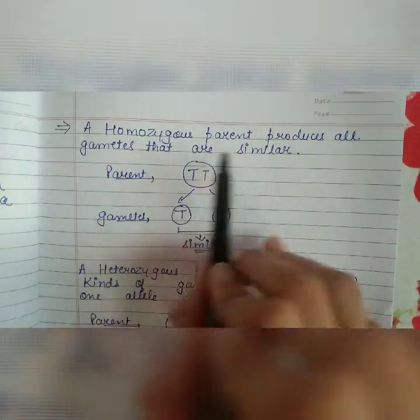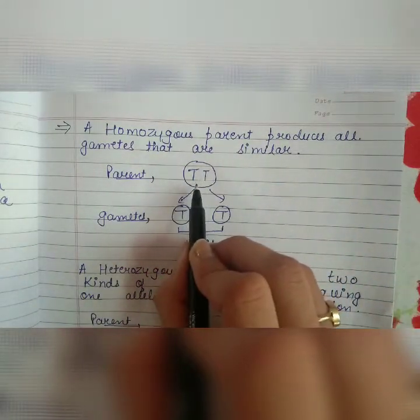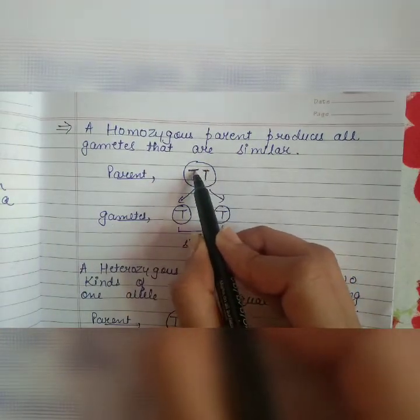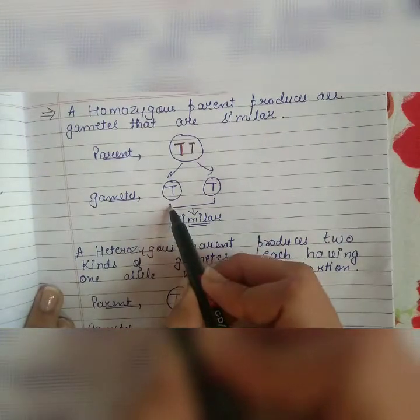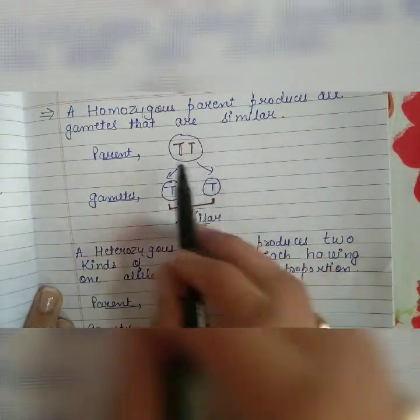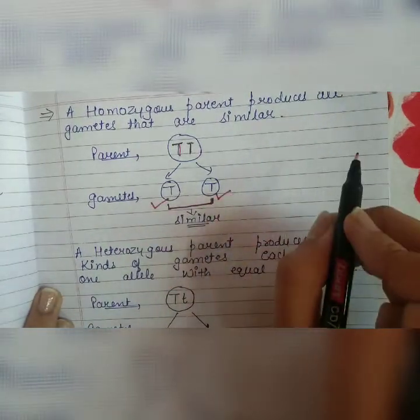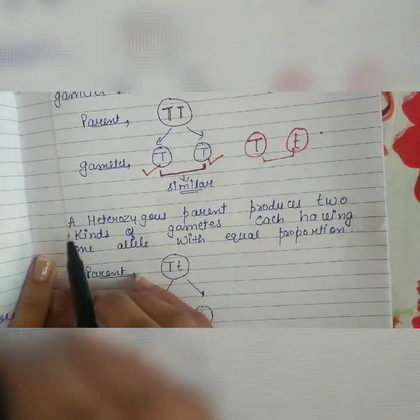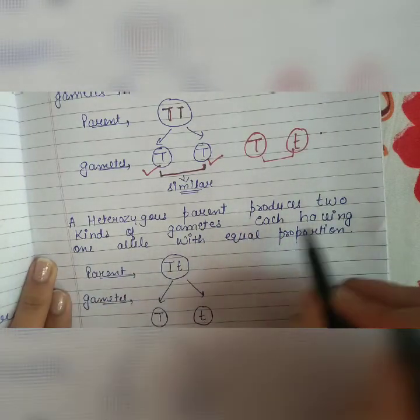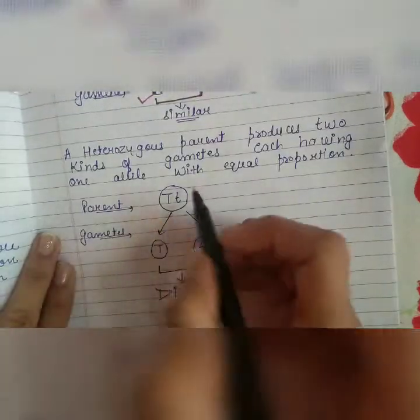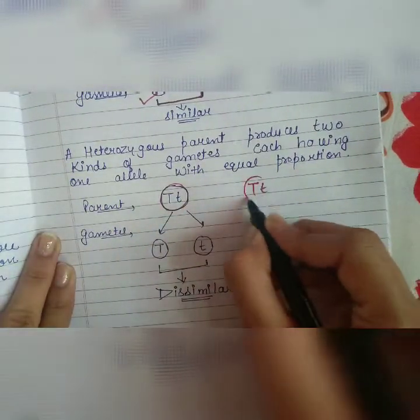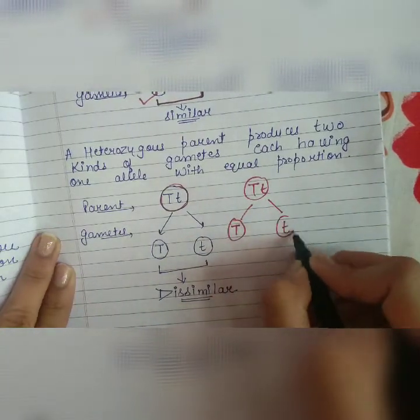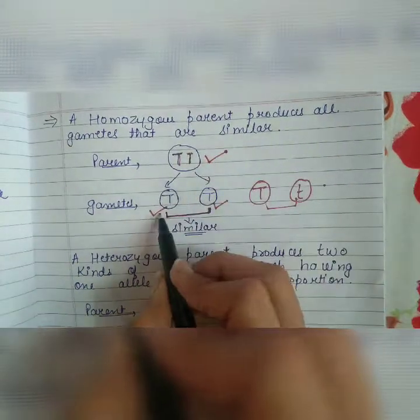A homozygous parent produces all gametes that are similar. Homozygous means jis mein dono same hain. For example, capital T capital T present hai na — toh jo gametes honge unme similar types of alleles honge, dono mein capital T aur capital T honge. Aisa nahi ki ek mein capital T aur dusre mein small t — yeh case hota hai humara heterozygous ka.